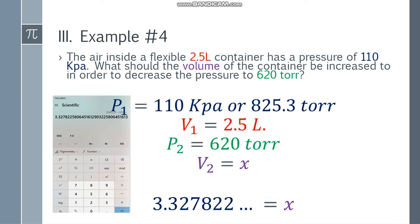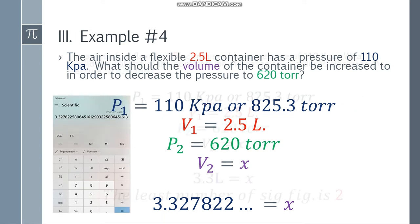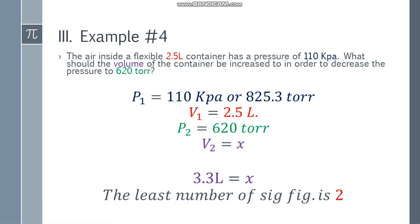For the final answer, let's check significant figures. 825.3 has four, 2.5 has two, and 620 torr also has two significant figures. So we use 2 significant figures, giving 3.3. Since the next digit is 2, we do not round up. The final answer is 3.3 liters.